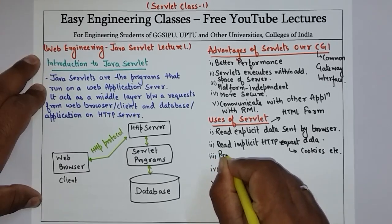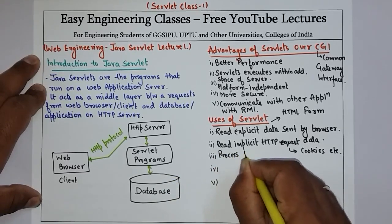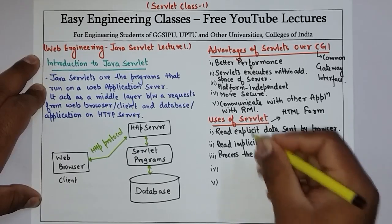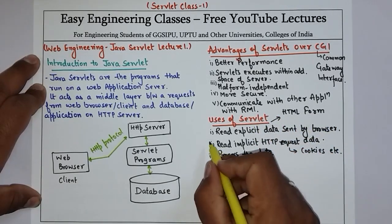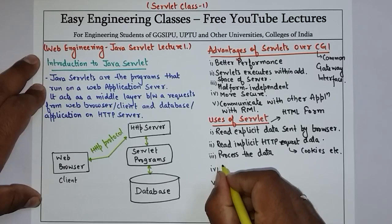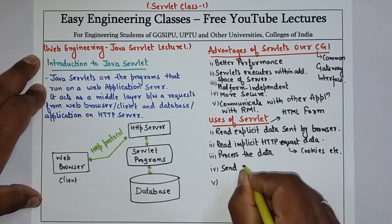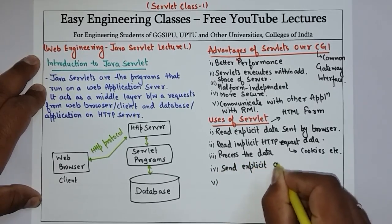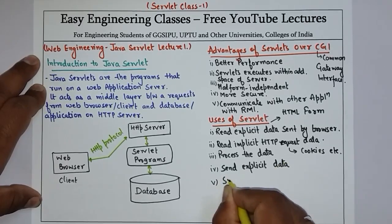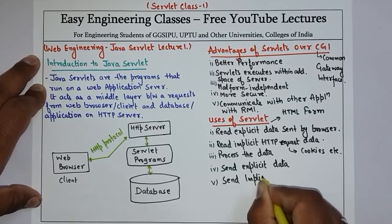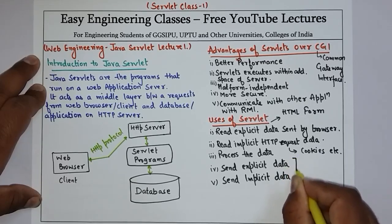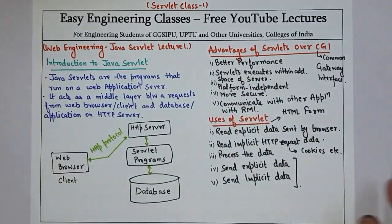You can also easily process the data before sending it to the database or any other application. Once we have read the data, we can send explicit as well as implicit data back to the browser. This concludes the brief introduction to Java servlet — its architecture, advantages over CGI, and its various uses. In the next video we will see the servlet lifecycle. Thank you for watching, please subscribe to my YouTube channel for more such tutorials.